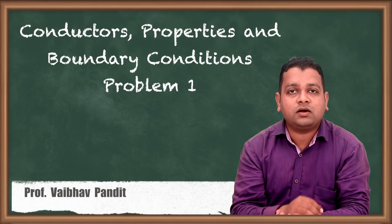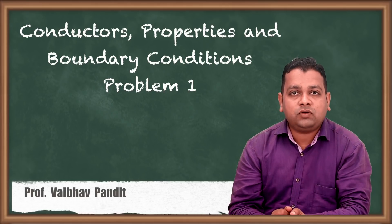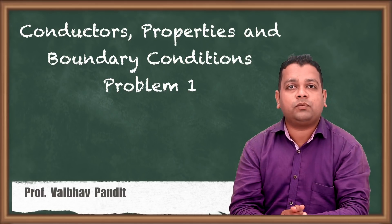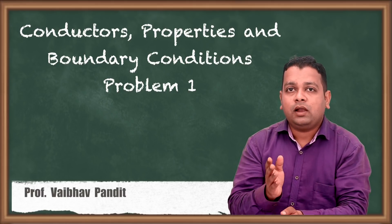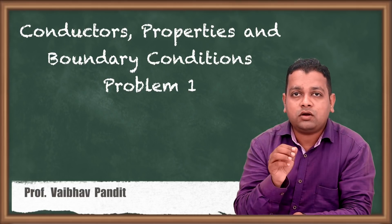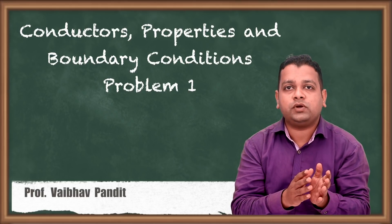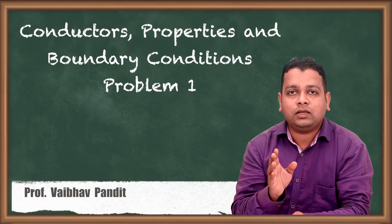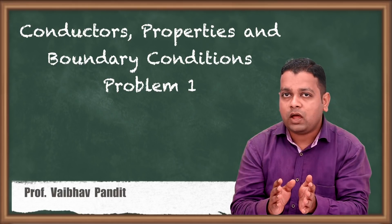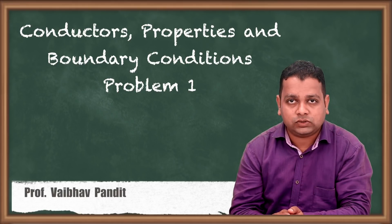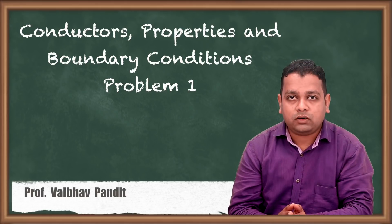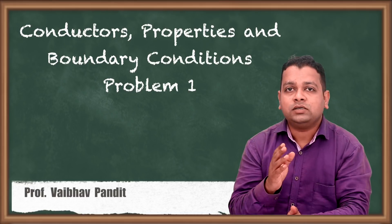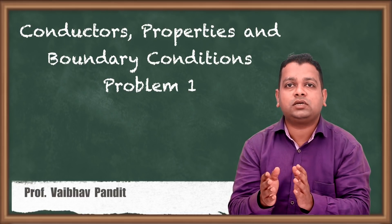We are in chapter number 5, Conductors and Dielectrics. Up till now in this chapter, we have gone through the concepts of what is current, the current density for different configurations of conductor shapes. Later on, we have gone through the current continuity equation. And in the last video, we have seen exactly the behavior of conductors for the electric field. We have derived the boundary conditions also, based on the behavior of the conductor — the relationships of drift velocity, electric field intensity, charge configuration, and current density.